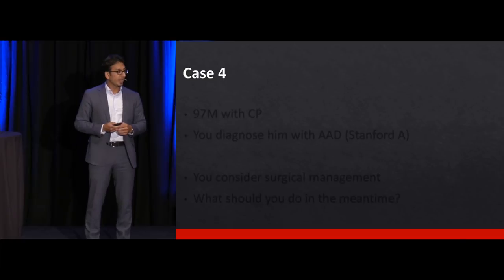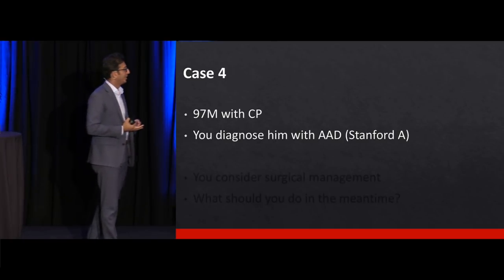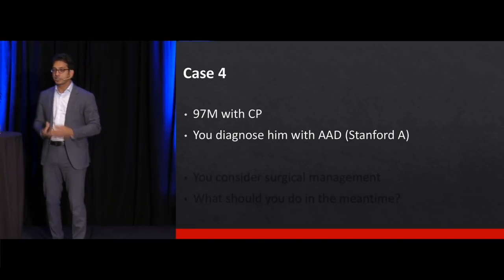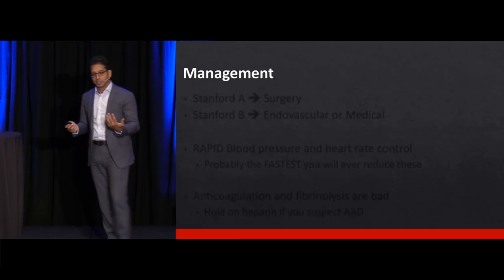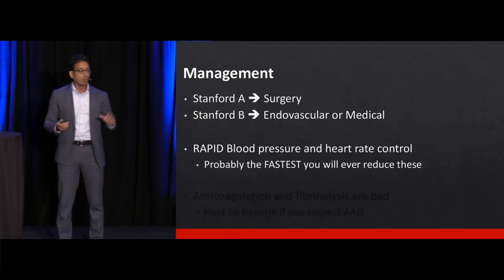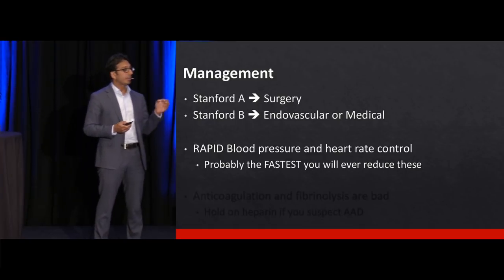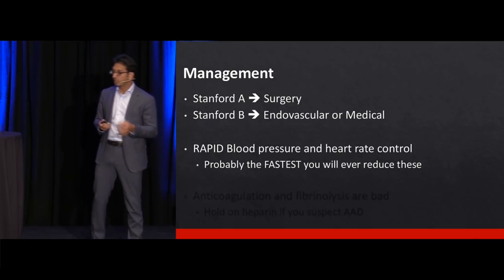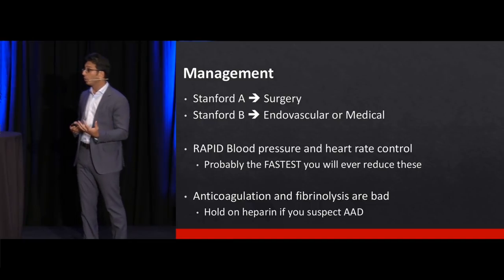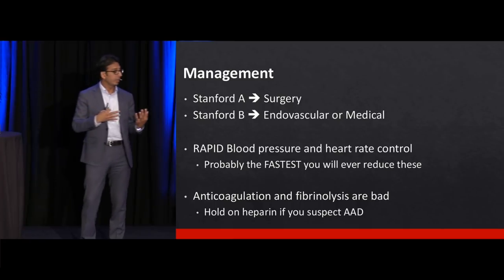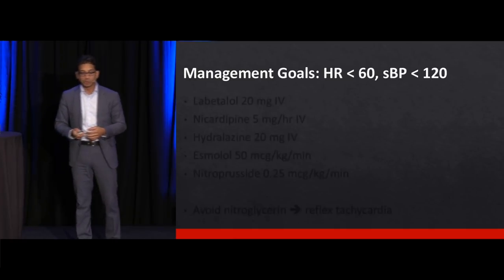Last case: 97-year-old man with chest pain, diagnosed with acute aortic dissection — a Stanford A dissection. Surgery is indicated. What do you do in the meantime while considering whether to operate on a 97-year-old? Stanford A means surgery, Stanford B is endovascular or medical. While waiting for surgery, you should rapidly control heart rate and blood pressure — probably the fastest you'll ever control them. Anticoagulation and fibrinolysis are bad. Hold heparin and don't diagnose unstable angina until you've ruled out dissection if it's high on your differential.